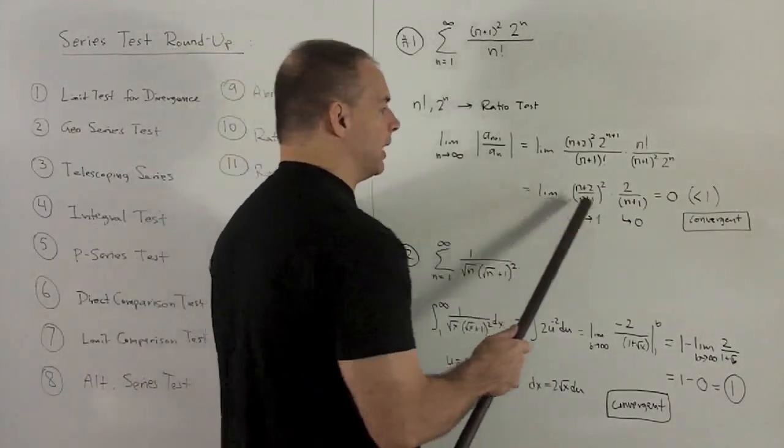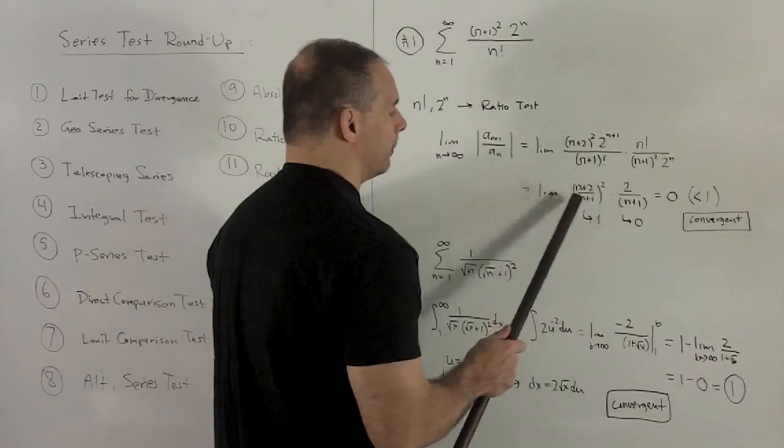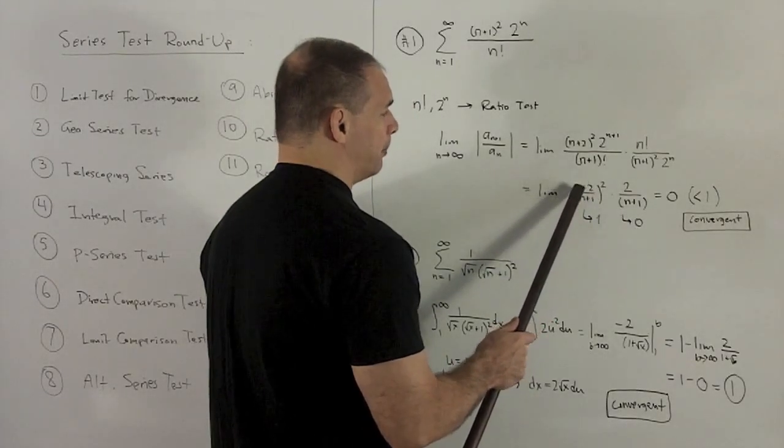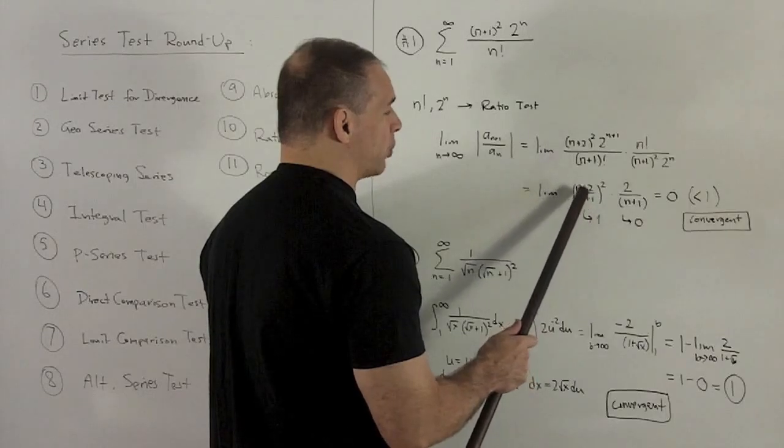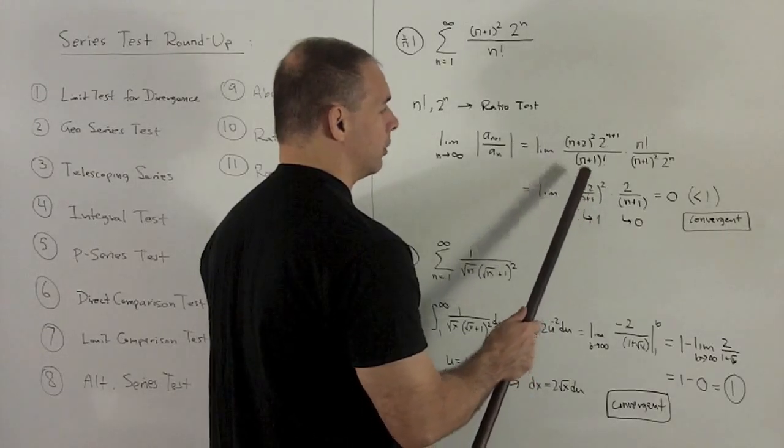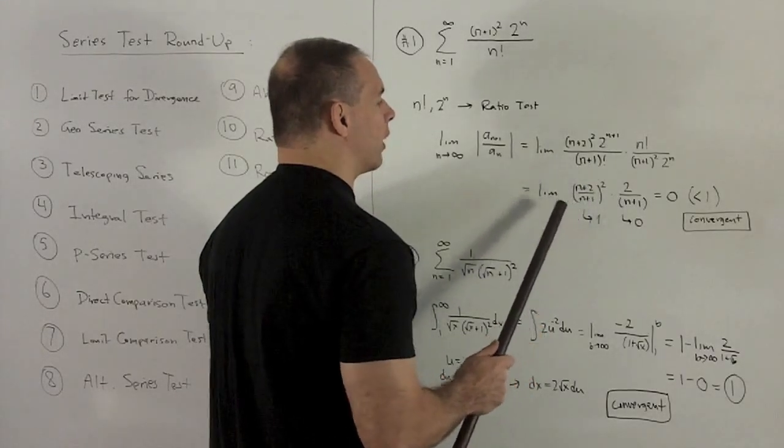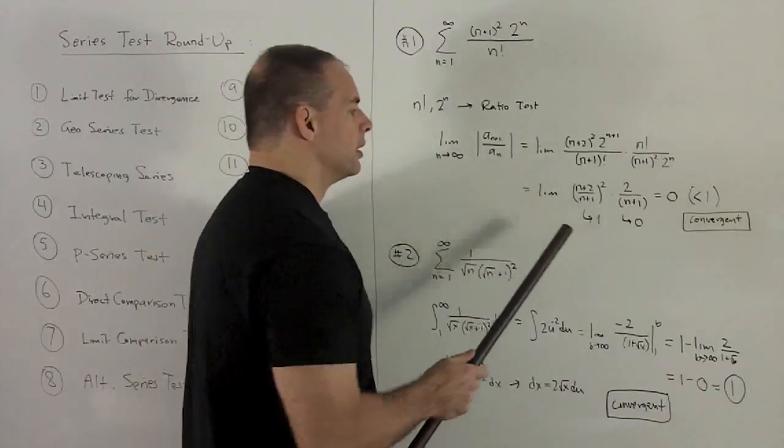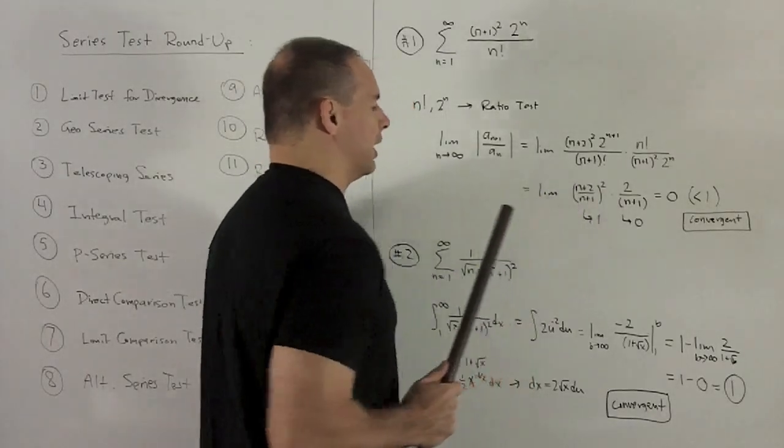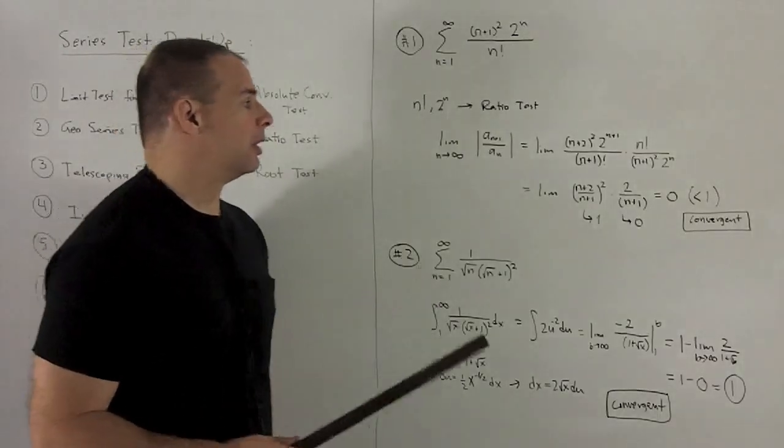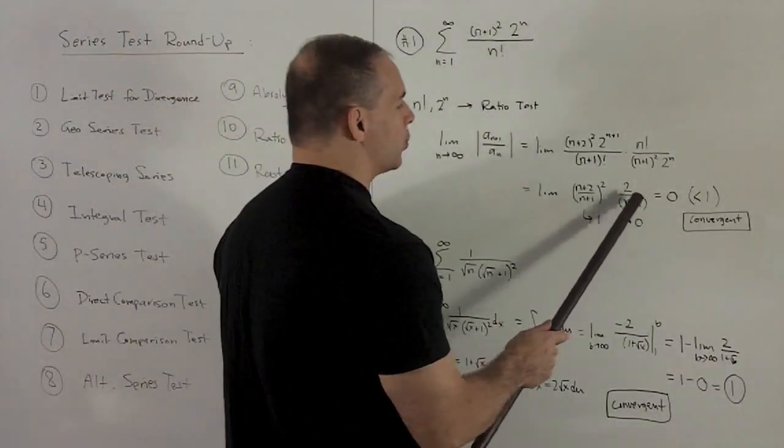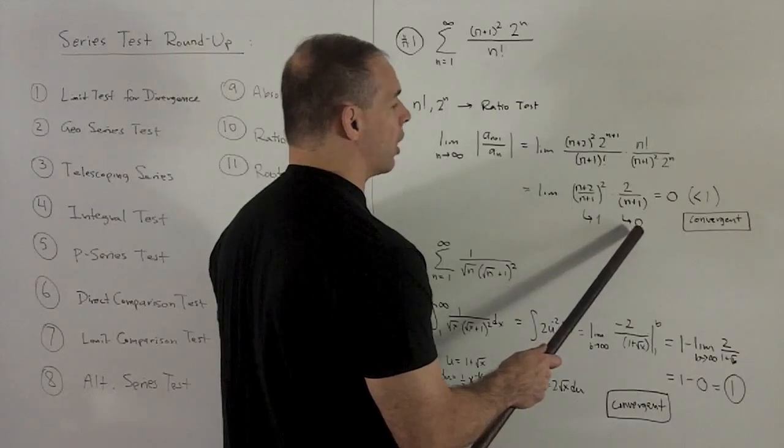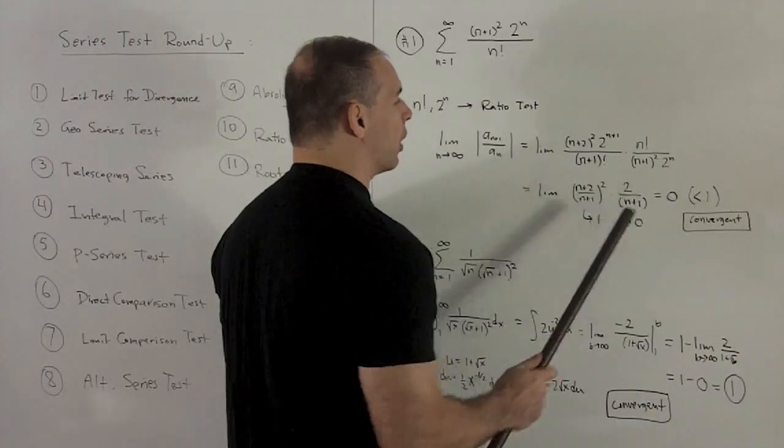Now we take the limit in each piece. For the first one, we'll have an (n+2) over an (n+1). So if I divide top and bottom by n, we're looking at (1 + 2/n) / (1 + 1/n). As the limit hits that, that's just going to be 1 over 1. So squaring that still leaves it 1. For the second term, the n+1 on the bottom is going to get large without bound, meaning this thing's going to get driven down to 0. So our limit's going to be 0.